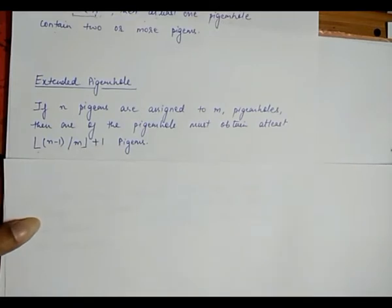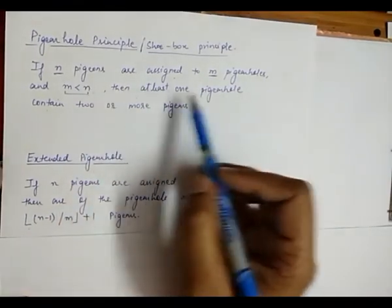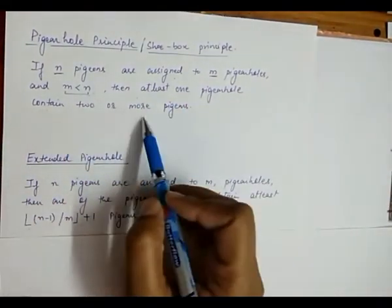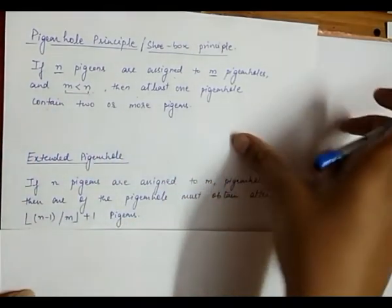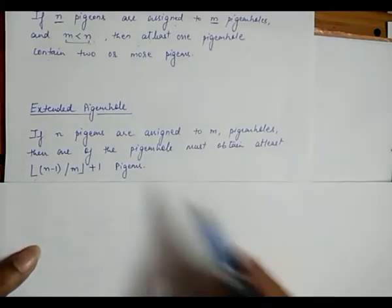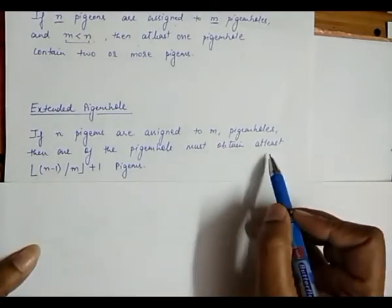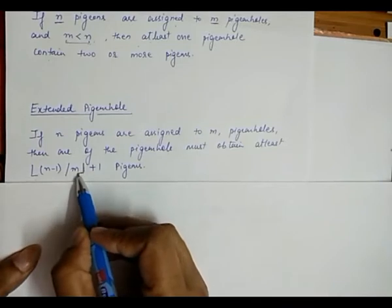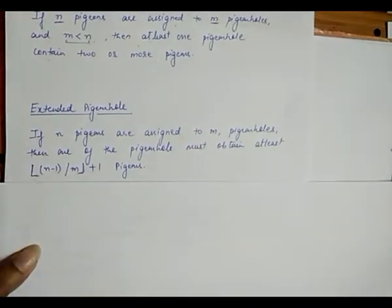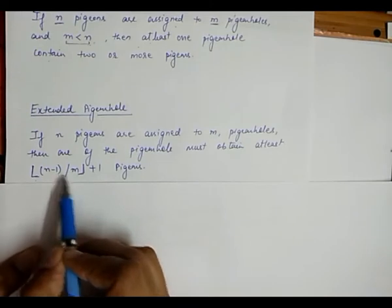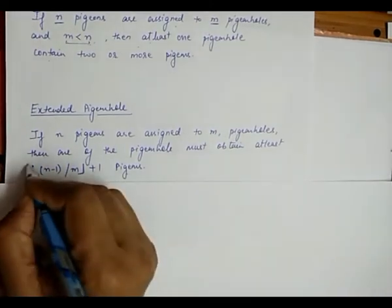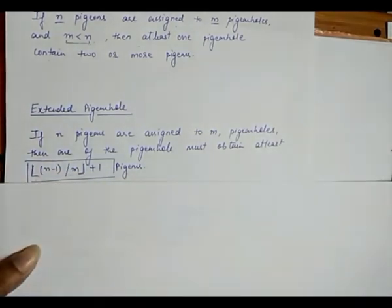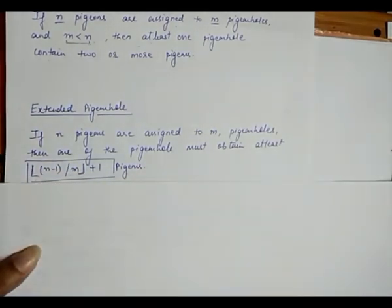As we discussed in the basic pigeonhole principle, if the number of pigeonholes is less than the number of pigeons, at least one pigeonhole contains two or more pigeons. We extend this statement with a formula using the flooring value — this sign denotes the flooring value — of (n minus 1) upon m, plus 1 pigeons. Now with this extended pigeonhole formula, we solve some problems.